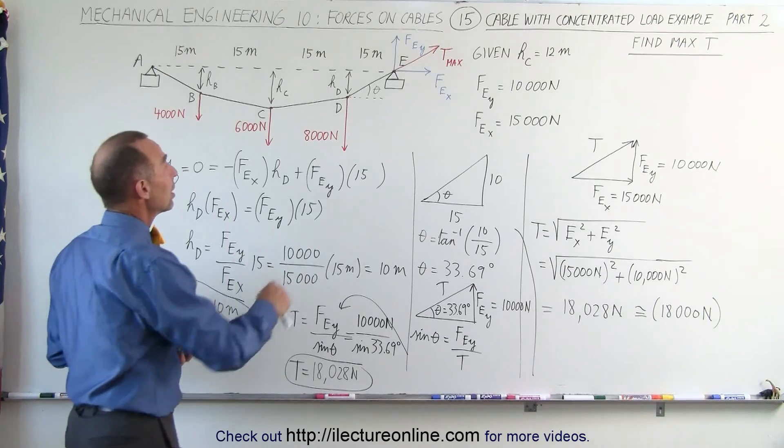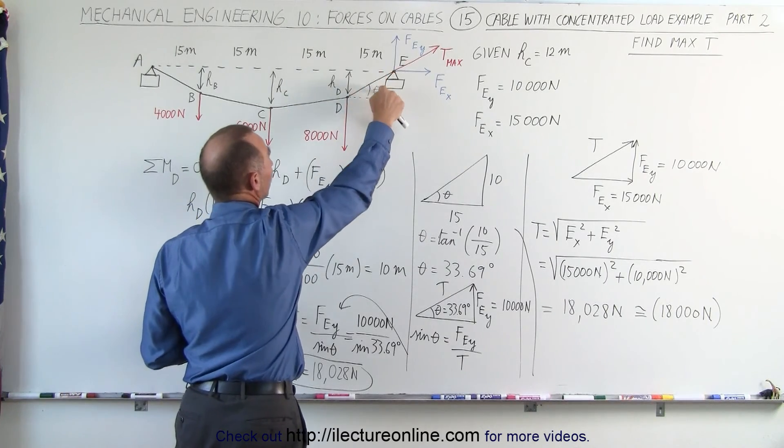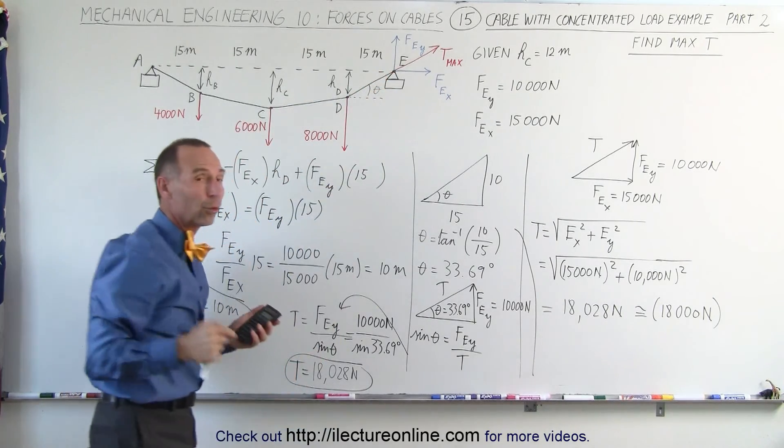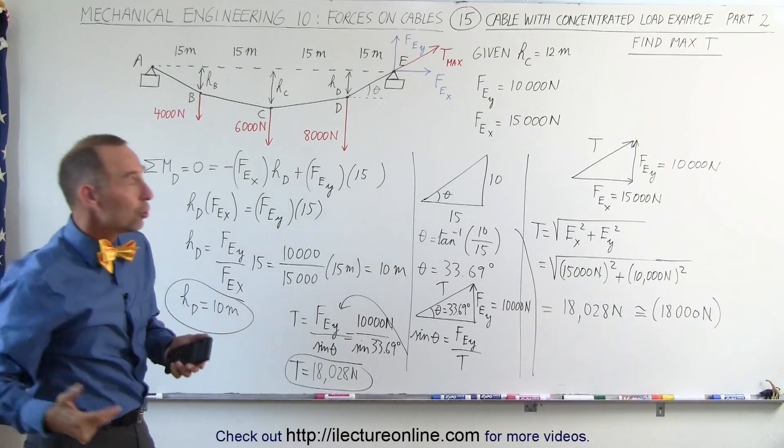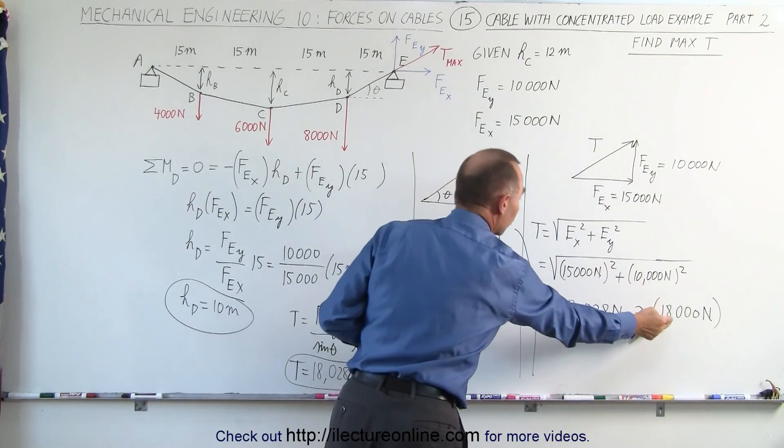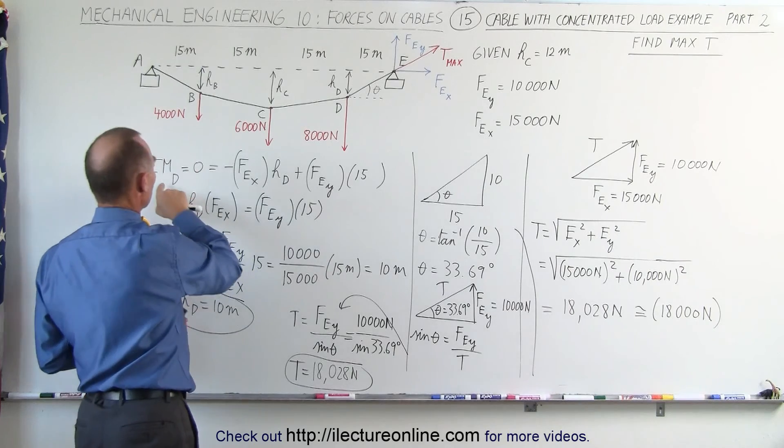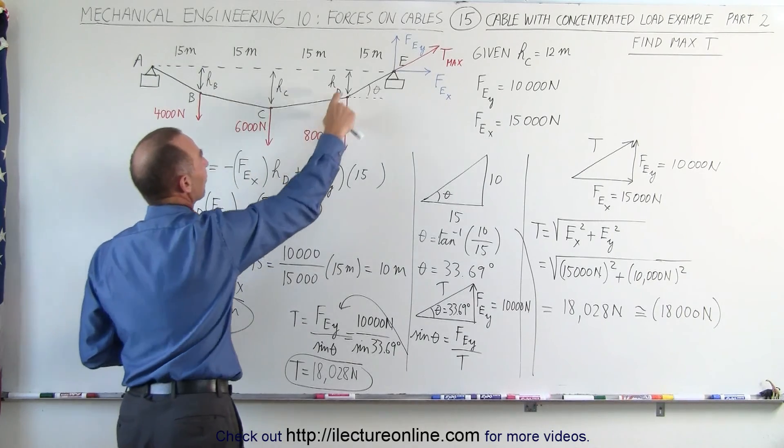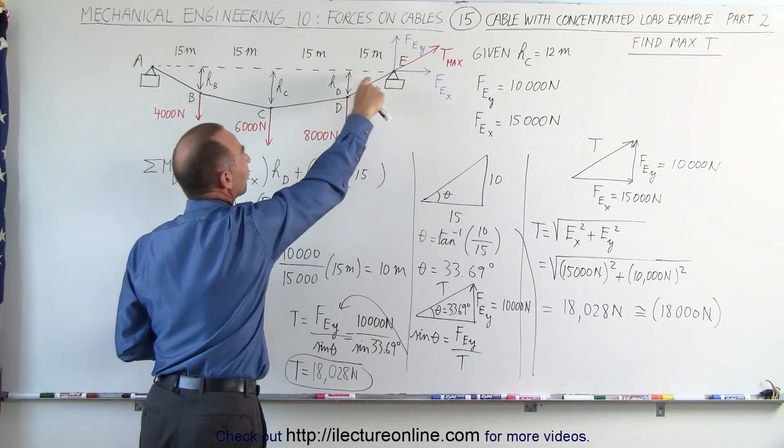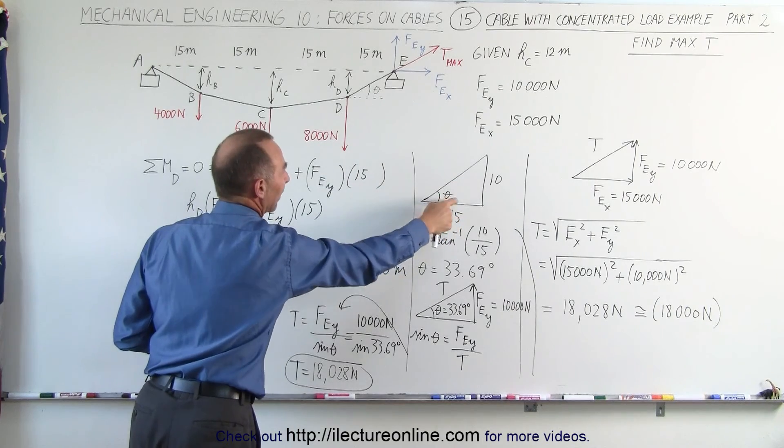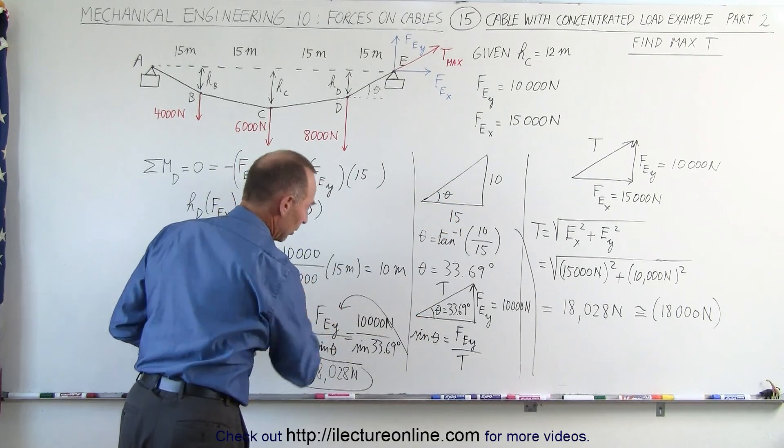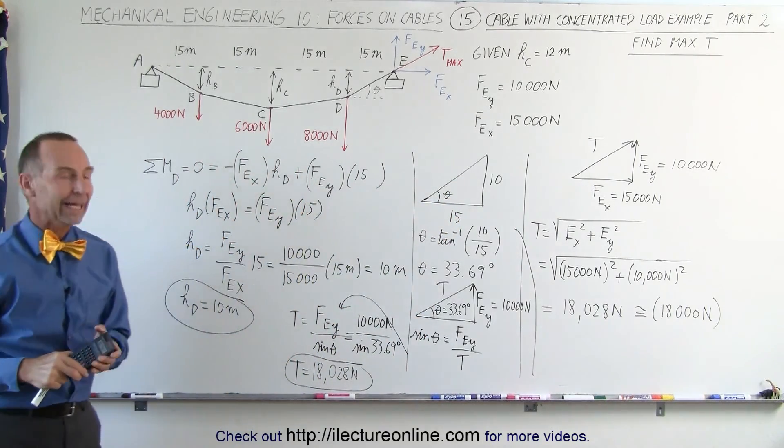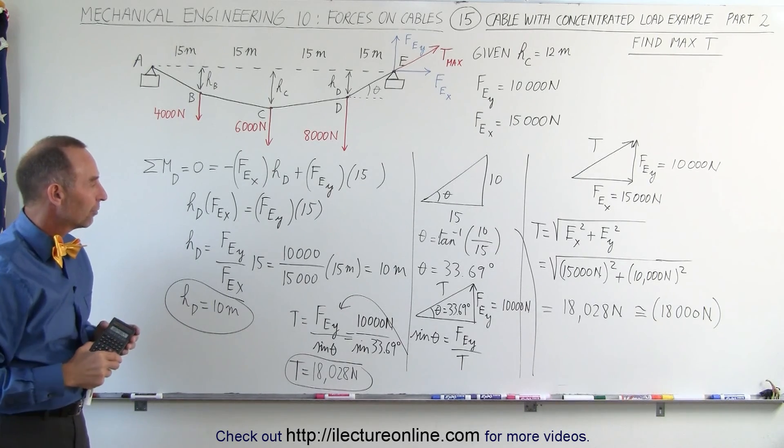In this case, when they're asking for maximum T, we're looking for the section that has the steepest slope or the greatest angle relative to the horizontal. We were able to use Pythagorean theorem to find the solution or use the equation where we find the moment about D to find H sub D and then use that information on the triangle to find the angle, and once we find the angle, we can find the tension in that portion of the cable. And that's how it's done.